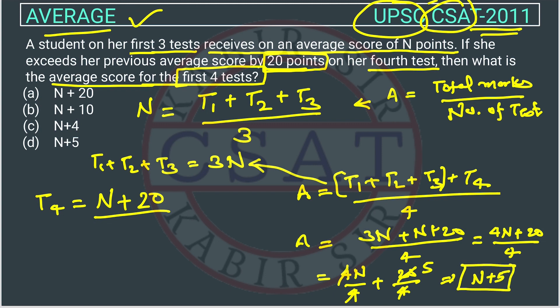The answer is n + 5, which is the correct option. This was an easy question. I hope you all understand — if you still have some problem, you can comment, call us, or WhatsApp us and I will explain this question personally.